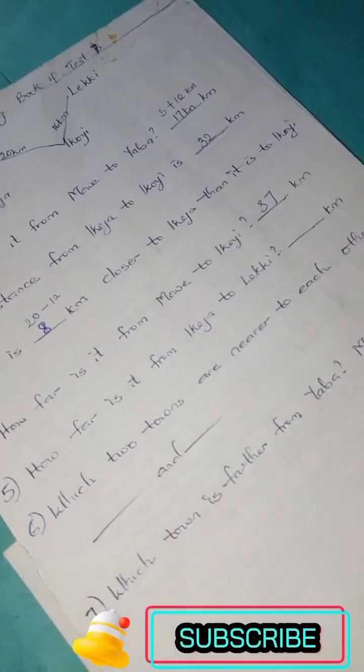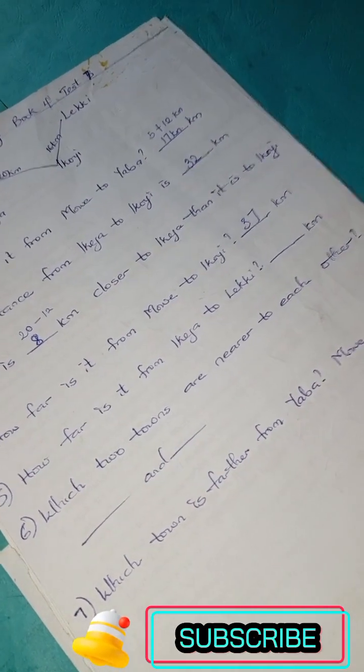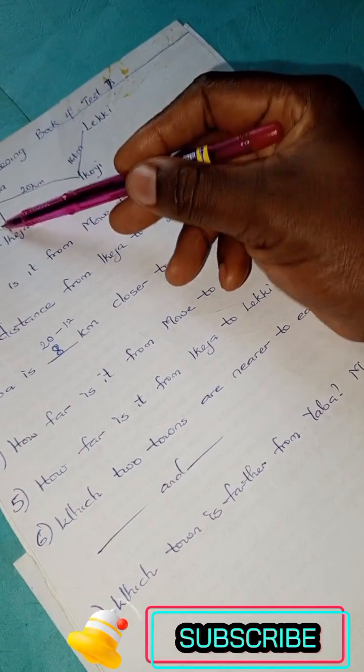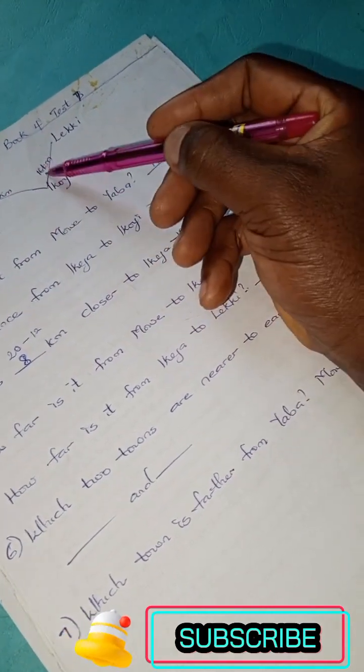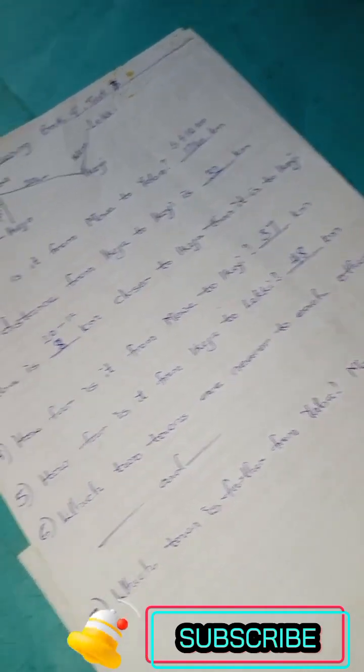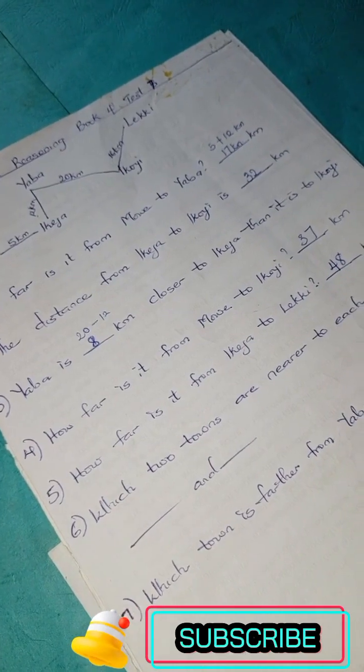The next question: how far is it from Ikeja to Leki? Ikeja to Leki, you have 12 kilometers plus 20 kilometers plus 16 kilometers. So we have 48 kilometers.